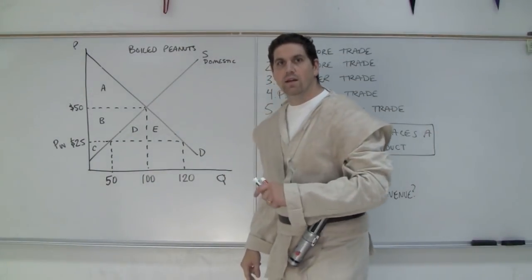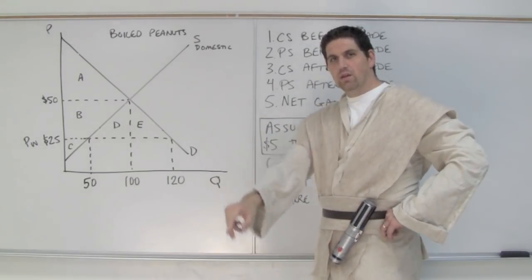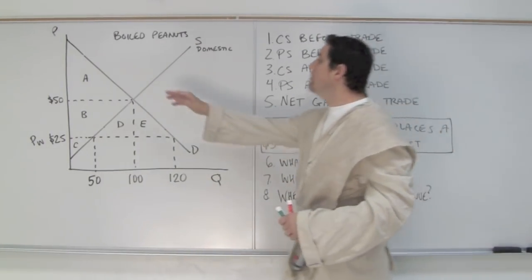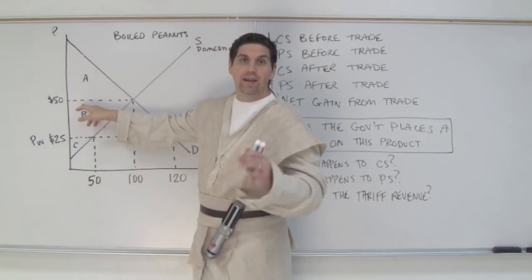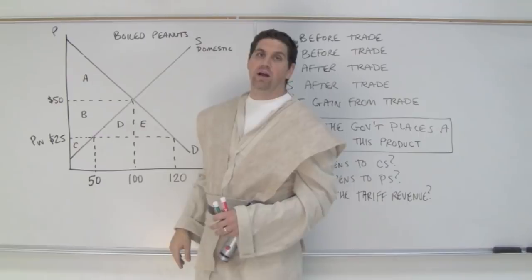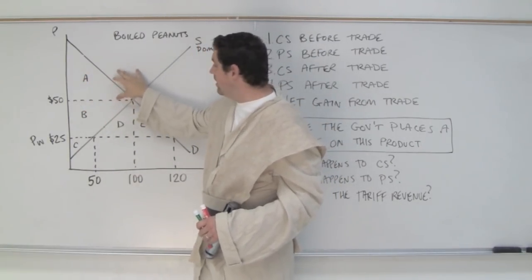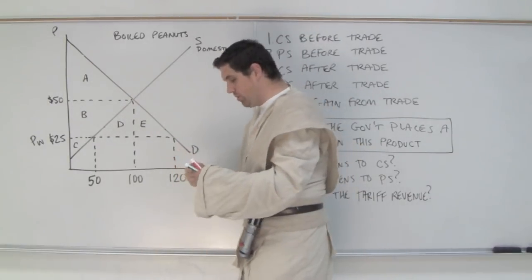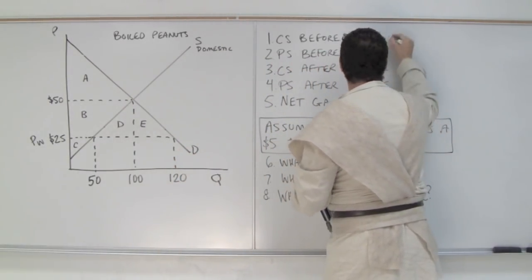Did you get it? Let's go over the answers. Consumer surplus before international trade: someone's willing to pay $100 — they didn't pay $100, they paid $50, right? Domestic equilibrium if we produce in our own country. Someone's willing to pay $70, they paid $50. Someone's willing to pay $60, they paid $50. Someone's willing to pay $52, they paid $50. So consumer surplus is right here — it's letter A.